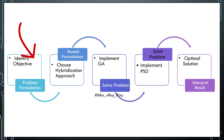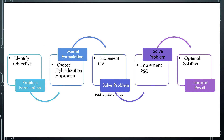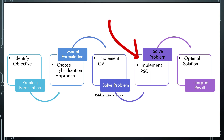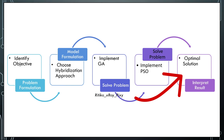Then we define the objective function and constraints to satisfy. Next, we choose the hybridization approach — the method depends on problem constraints, complexity, and resources available. We apply the genetic algorithm for the exploration phase, performing selection, crossover, and mutation operators. After that, we apply the particle swarm optimization algorithm to perform the acceleration phase and update the agents' positions accordingly.